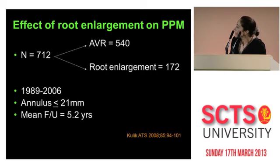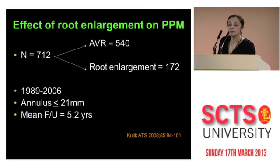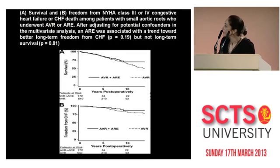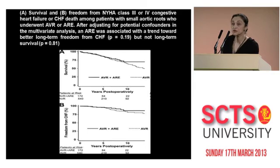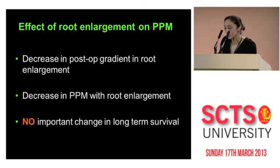One of the studies is by Kulik and colleagues, where they looked at 712 patients — a retrospective ongoing analysis. One-third of the patients had root enlargement with annuli less than 21 mm. They showed that there was really no difference in either survival or freedom from congestive heart failure whether the patient had root enlargement, simple aortic valve replacement, or valve replacement and enlargement. However, in the root enlargement cohort, there was less gradient across the valve and less patient prosthesis mismatch, but again no important change in long-term survival.